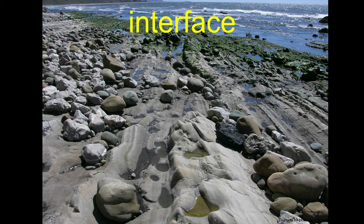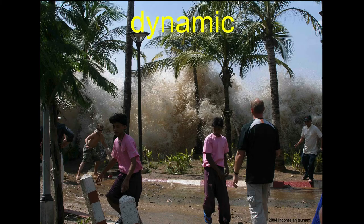Here we see an example from up by Summerland. Going from left to right we see dry terrestrial boulders, sand, not much conspicuous macroscopic life, and then as we go right we get more algae, more crabs, mussels — things of that nature. Interface is a key aspect of the coast.